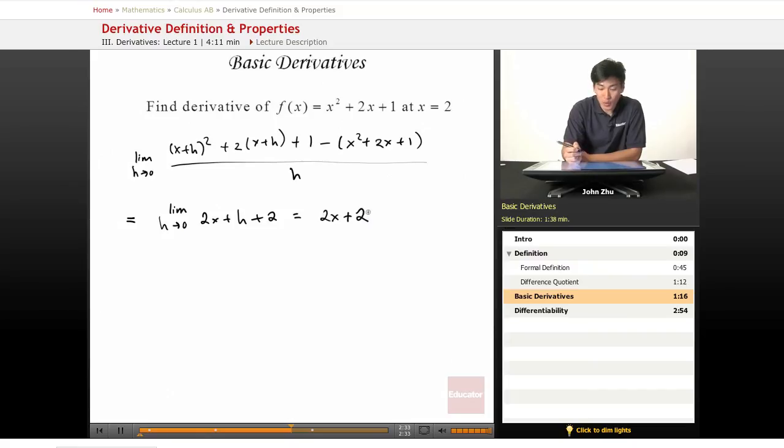And at x equals 2, the function becomes 6. And there's our answer for finding the derivative at a certain point just by applying the basic definition of derivatives.